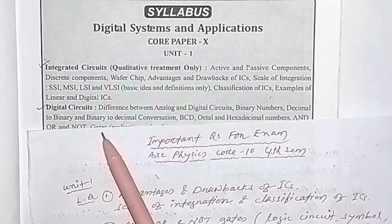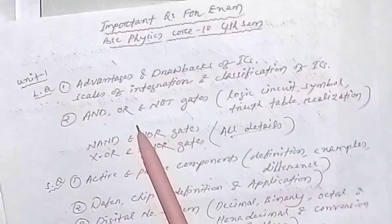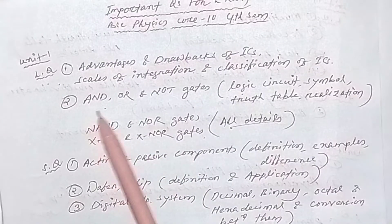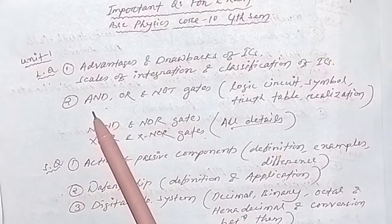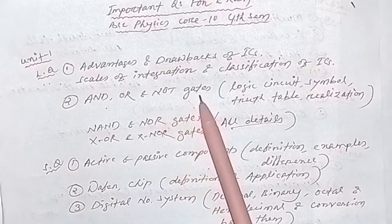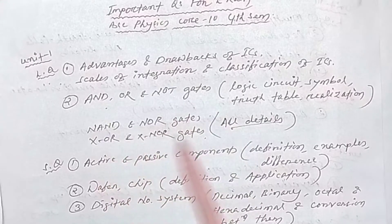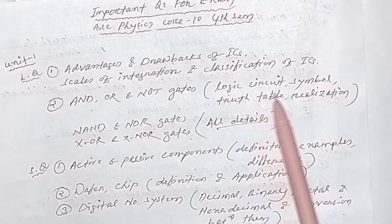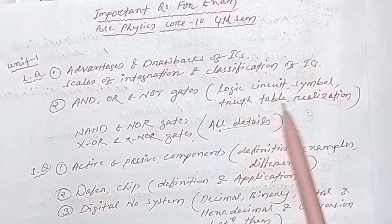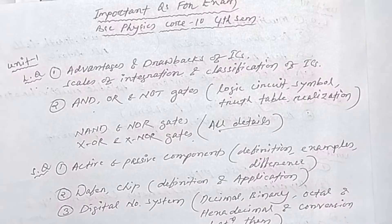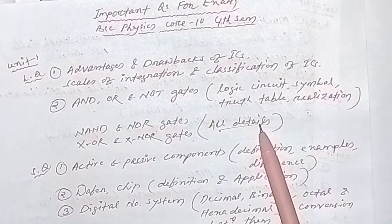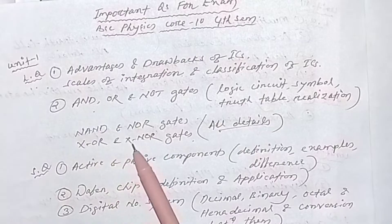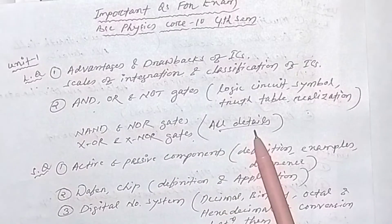The second chapter has long questions mainly on gates — AND gates, OR gates, and NOT gates. For each gate you need to know the logic circuit, the symbol, the truth table, and the realization. Also covered are NAND gates, NOR gates, XOR and XNOR gates — all in detail.